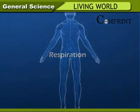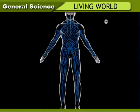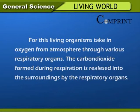Respiration. Man needs energy to carry out different activities. He takes food to get energy. The food taken by organisms has energy in it. This food is digested and is carried to different organs of the body. Energy is released only when this digested food reacts with oxygen. This energy is used to carry out various metabolic activities. Living organisms take in oxygen from the atmosphere through various respiratory organs. The carbon dioxide formed during respiration is released into the surroundings by the respiratory organs.